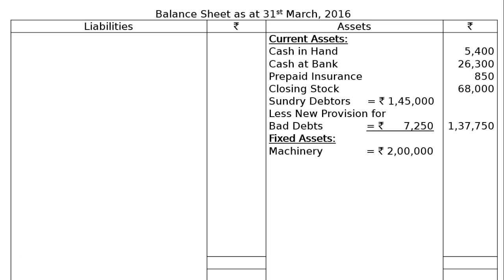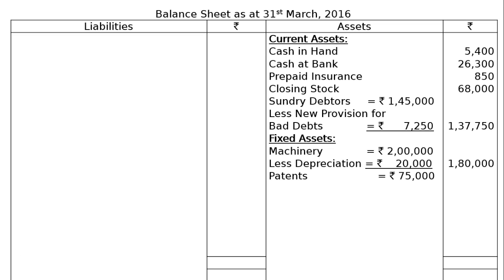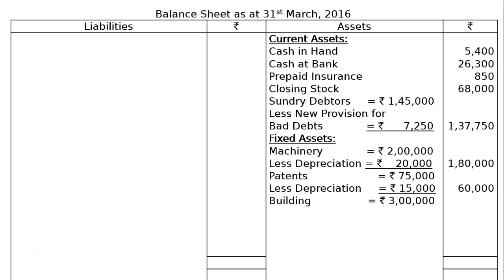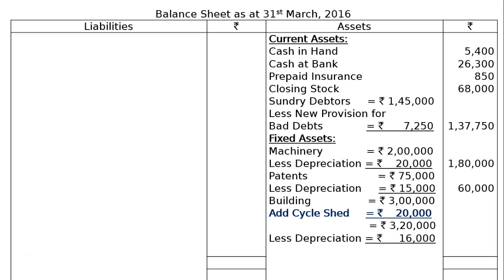Then fixed assets. Machinery is Rs. 2,00,000, less depreciation 10%, that is Rs. 20,000; we will have Rs. 1,80,000. Then patents Rs. 75,000, less depreciation 20%, that is Rs. 15,000; we will have Rs. 60,000. And building Rs. 3,00,000, add cycle shed Rs. 20,000 — cycle shed is a construction included in wages which we have deducted from wages and added to building — making it Rs. 3,20,000. We charge 5% depreciation on Rs. 3,20,000 for the whole year, that is Rs. 16,000. In the final column we will have Rs. 3,04,000.